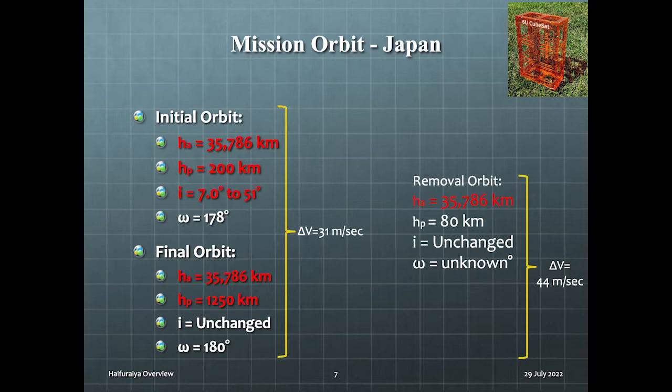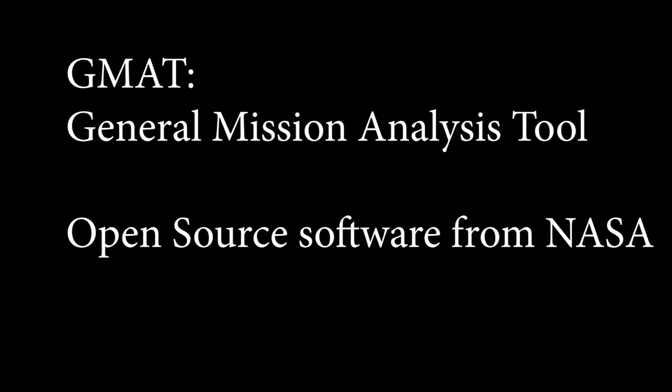There are at least two drawbacks to raising the altitude like this. First, desaturation of the reaction wheels is harder if you don't go down to something like 500 kilometers. Second, preliminary analysis shows that the delta-V is higher. We have a result from an AMSAT DL volunteer that it's three times higher at 1,250 than 500. So we will be using GMAT, or the General Mission Analysis Tool from NASA, to specify the orbits and to produce the values needed. This is an open-source software.